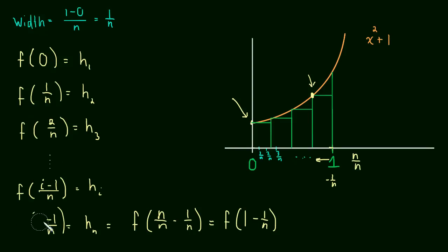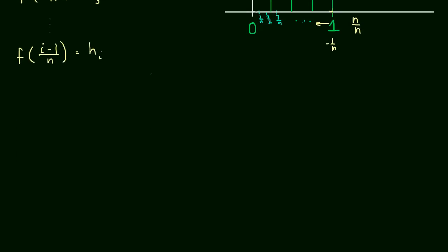So we figured out our formula to give us the height of any rectangle. And now all we have to do is write the limit of a sum. So what we have left to do is take the limit as n approaches infinity of the sum, as i goes from 1 to n, of f of i minus 1 over n times 1 over n.